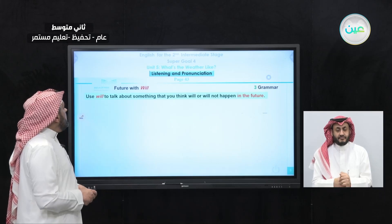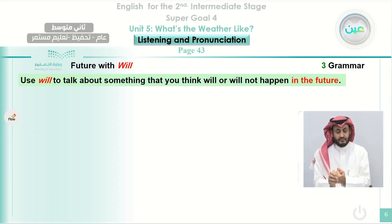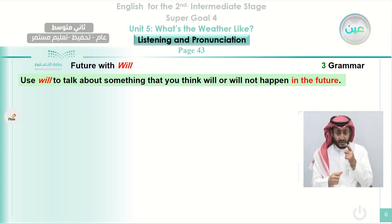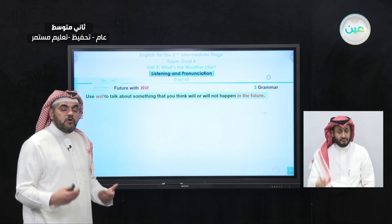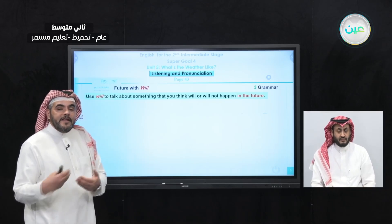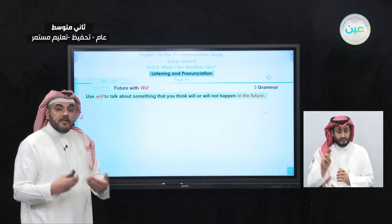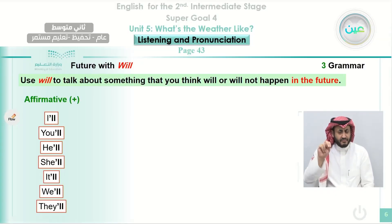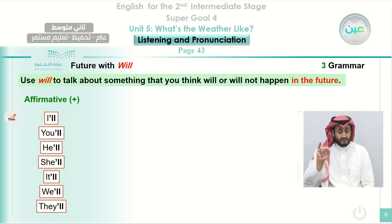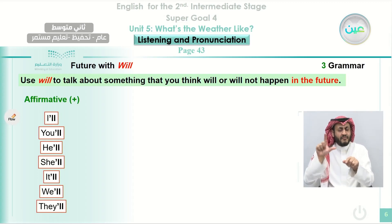We use 'will' to talk about something that you think will or will not happen in the future. In the affirmative form: 'I will go to school.' In the negative form, we say 'I won't go to school' — 'won't' is a contraction of 'will not.' You can also see the contractions of 'will' with pronouns: I'll, you'll, he'll, she'll, it'll, we'll, and they'll. You use the verb in its base form after the contraction.